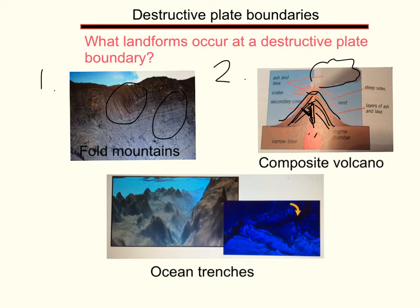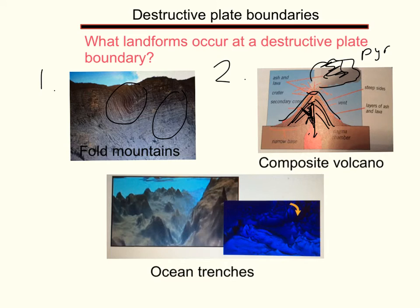Once the pressure is too much and that volcanic material moves up the chamber and up the vent, it explodes — it is really violent and really powerful, hence all the gas and ash. We call this pyroclastic flow. Pyroclastic means rocks, and you get a flow because it comes down the sides like an avalanche. It's a pyroclastic flow.